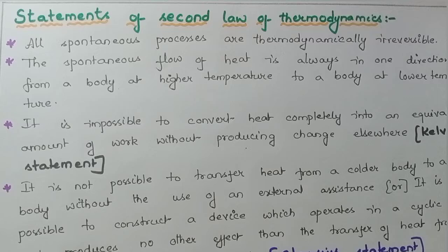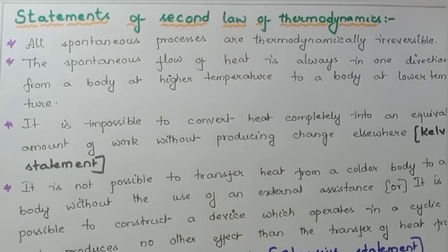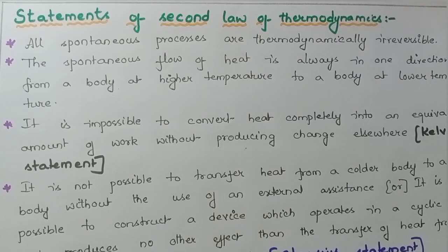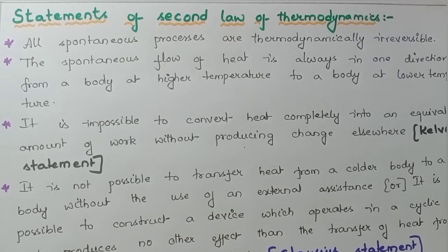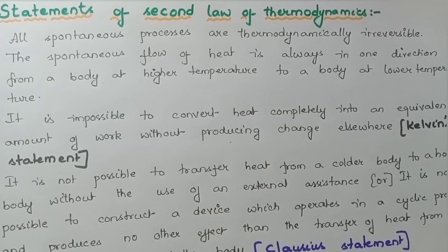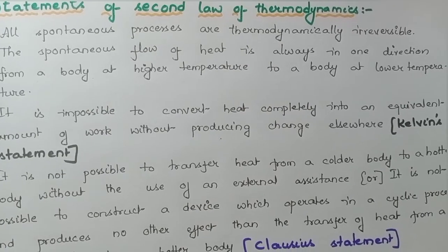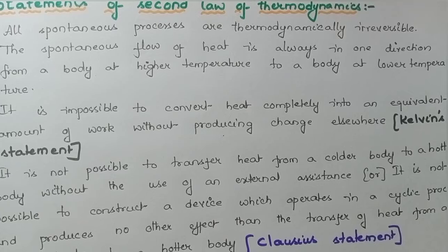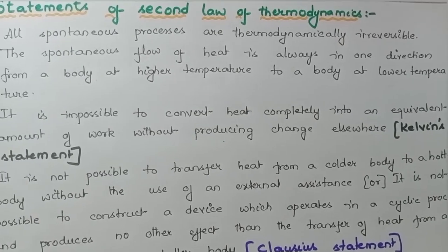Coming to the second statement: we all know that heat flows from a hotter body to a colder body, that is from a body at higher temperature to a body at lower temperature. The second statement of the second law of thermodynamics states that the spontaneous flow of heat is always unidirectional — from a body at higher temperature to a body at lower temperature.